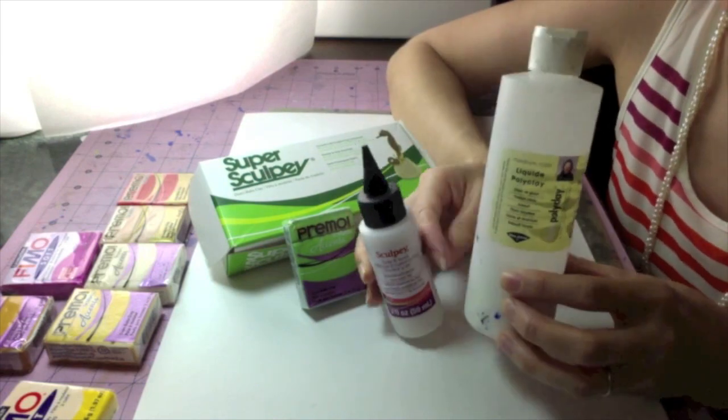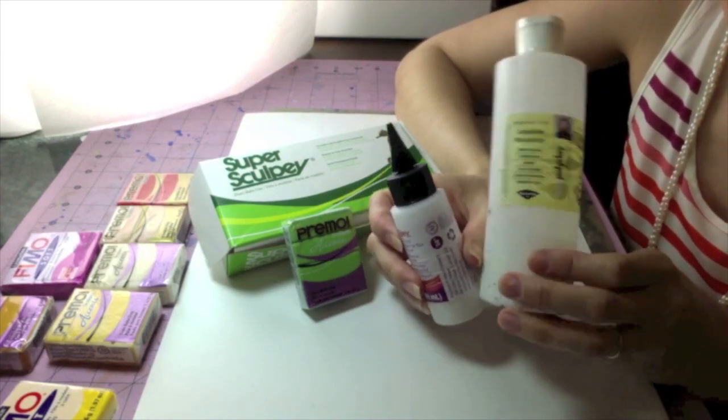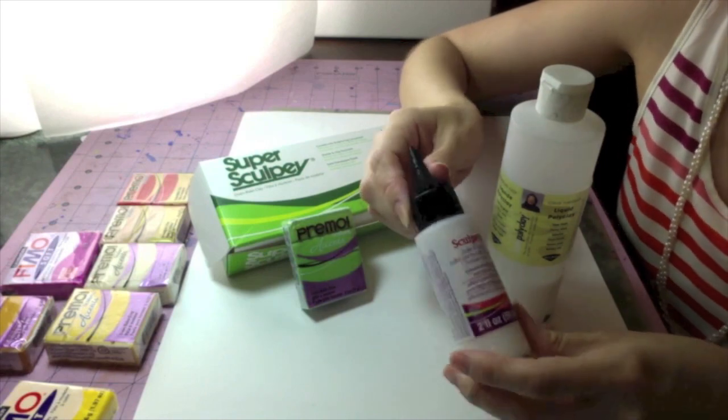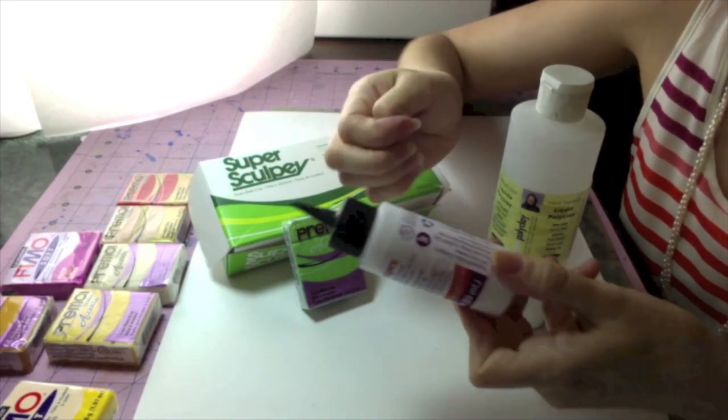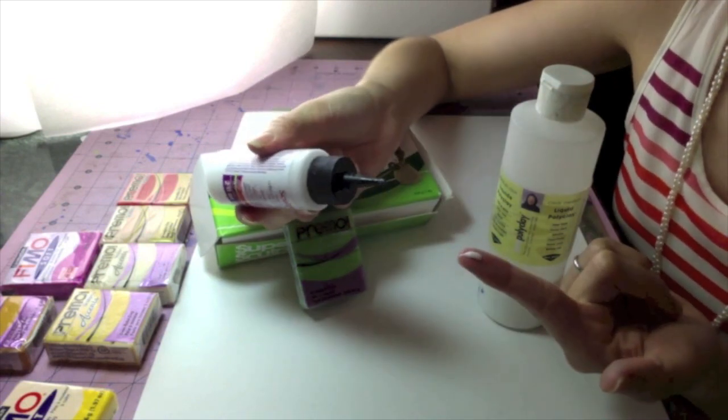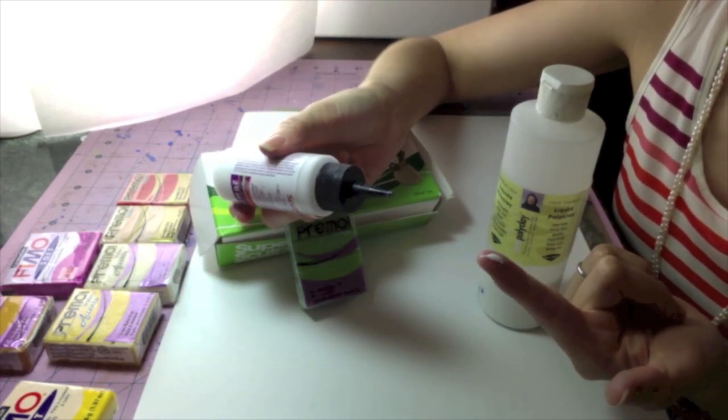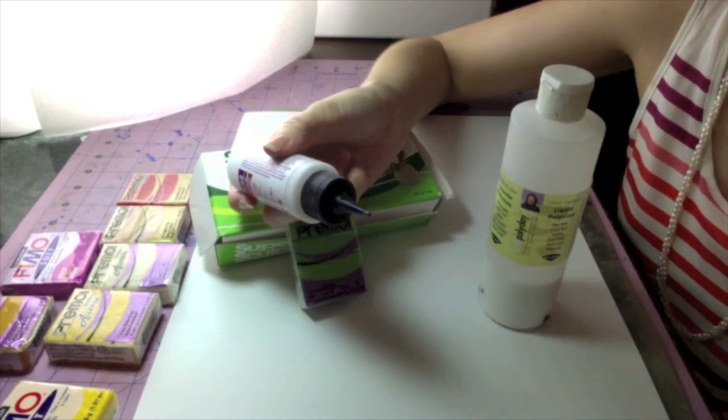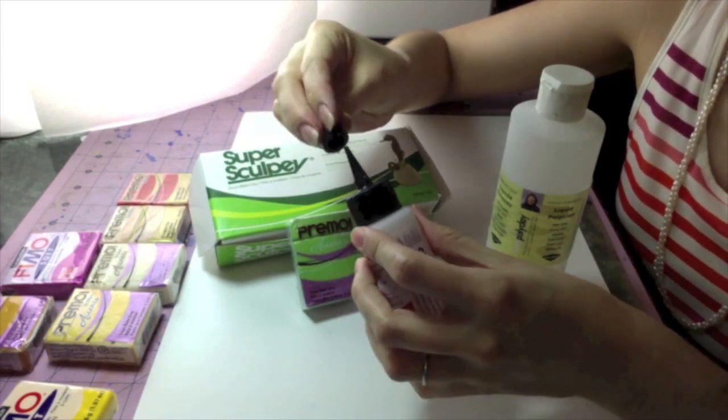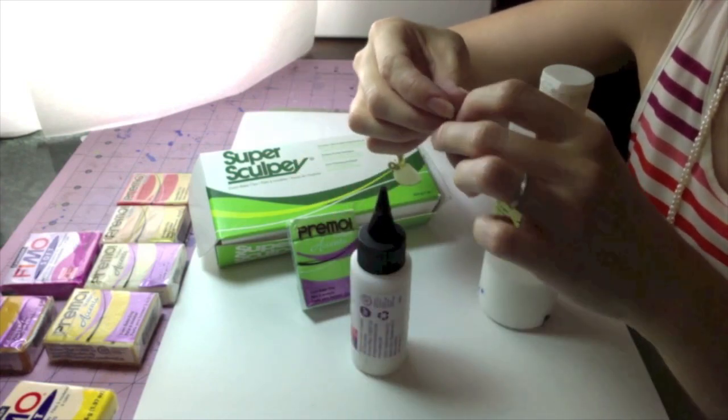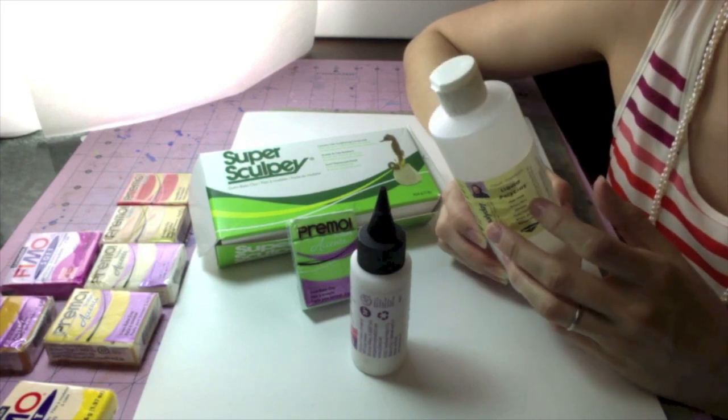Then there are the liquid Sculpeys, or liquid polymers. This one is Translucent Liquid Sculpey, and you can find this easily in the art clay aisle. It looks like glue, and you can use it kind of like glue. Once it bakes, it's kind of transparent and a little stretchy too. It's nice for joining two pieces together that you don't want to smash together, especially if they're really detailed.